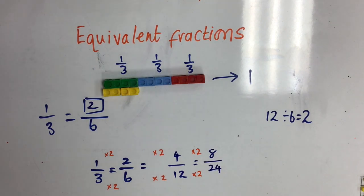So, I know that one third is equivalent to two sixths, which is equivalent to four twelfths, which is equivalent to eight twenty-fourths.